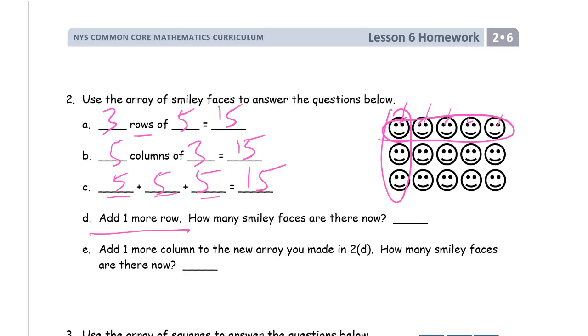Now, it says to add one more row. So, we're going to have to draw it. I'm going to erase that stuff I drew before just to clean it up. Add another row of smiley faces. All right. One, two, three, four, five.